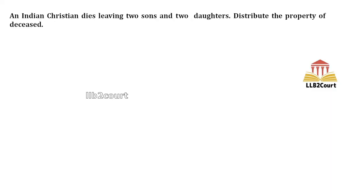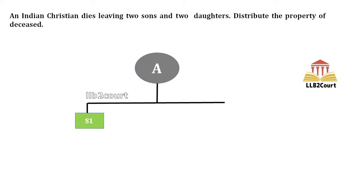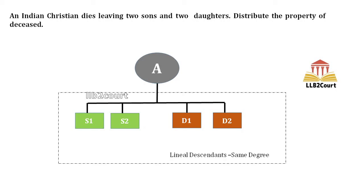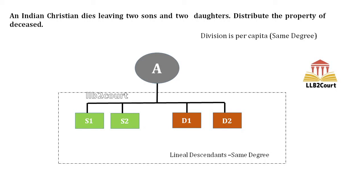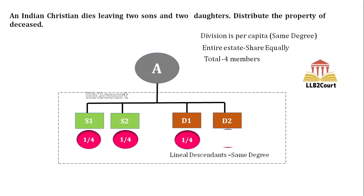Problem 1: An Indian Christian dies leaving two sons and two daughters. Let's assume A is the Indian Christian who died intestate, survived by two sons S1 and S2, and two daughters D1 and D2. They are lineal descendants belonging to the same degree — first degree — so the division is per capita, meaning each will share the property equally. Total members are four, so each will get 1/4.